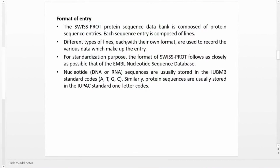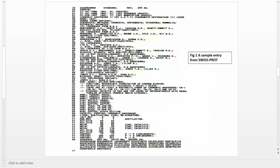Different types of lines, each with their own format, are used to record various data making up the entry. For standardization, the format of Swiss-Prot follows as closely as possible that of the EMBL nucleotide sequence database. Just as in EMBL, the entry starts with ID and ends with double slash, and the sequence section starts with SQ and ends with double slash.